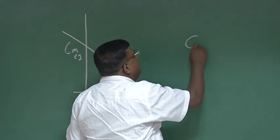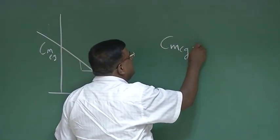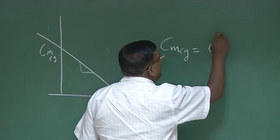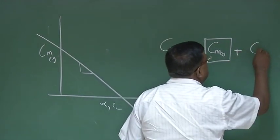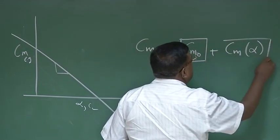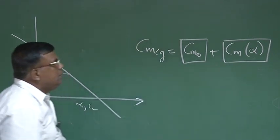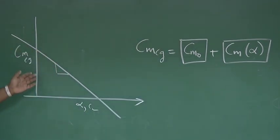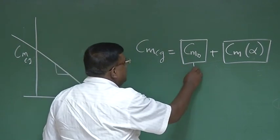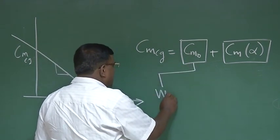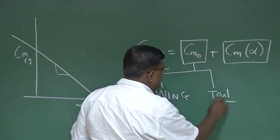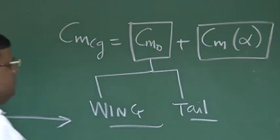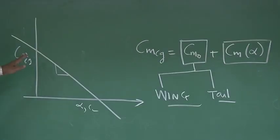I can write CM of the whole aircraft — CM CG — as CM0, where one contribution comes from CM0 and another CM comes from angle of attack alpha. You see here, it is like y = mx + c. Who are the contributors to CM0? One is the wing, one is the tail. We will talk about CM0 first, then we will come to the slope.